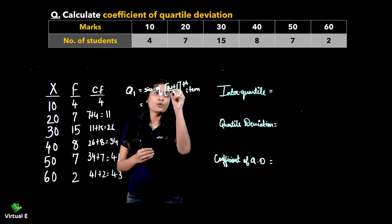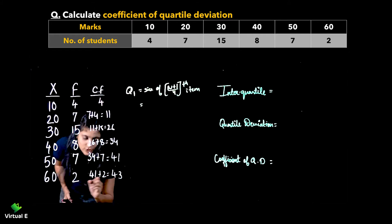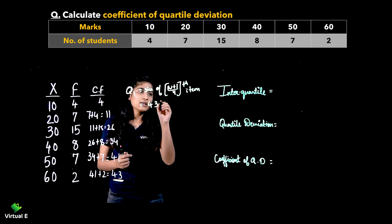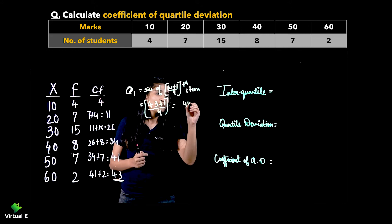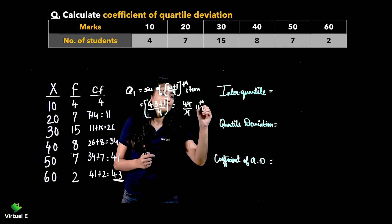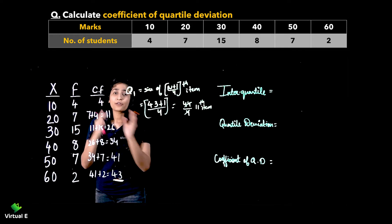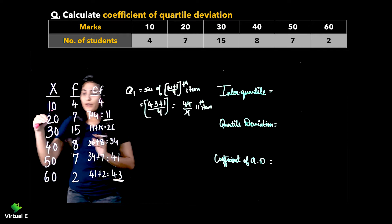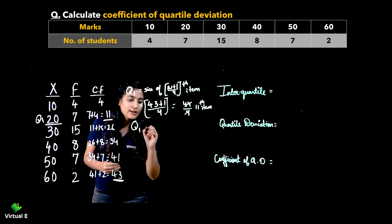Now applying the formula — N is 43. So we calculate 43 plus 1 upon 4, which gives 44 upon 4, and the final answer is the 11th item. Looking at the cumulative frequency, the 11th item falls in the group with cumulative frequency 11. So your Q1 will be 20.